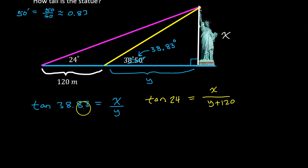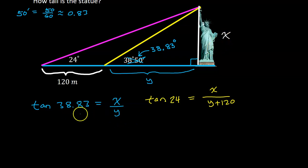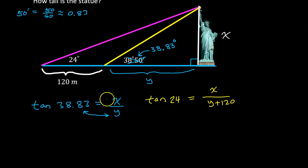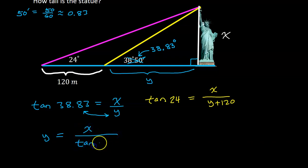Let's get one of the variables by itself in the blue equation and then substitute that into the yellow equation. Eventually I want to solve for X, so I will get Y by itself in the blue equation so I can substitute for Y — that way I'll have all X's. If I want to get Y by itself, we can swap the denominator and the number. So this will become Y equals X over tangent 38.83.